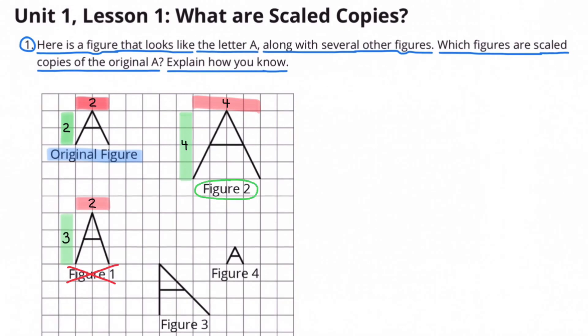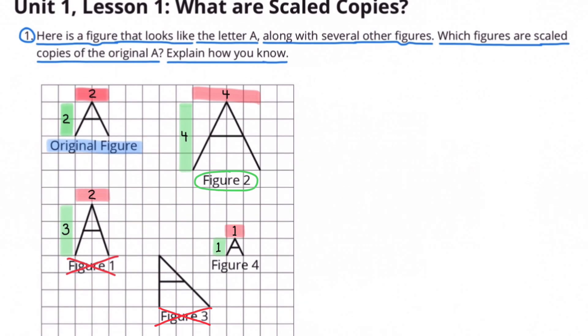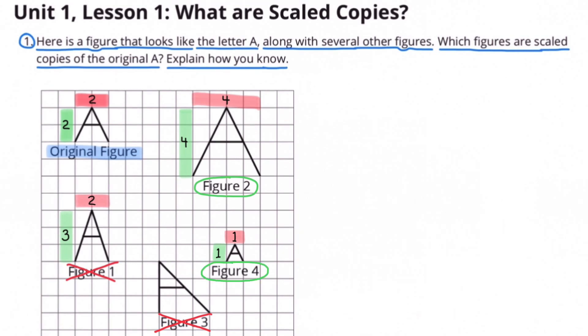Let's take a look at figure three. Figure three is not symmetrical like the original figure, so that is not a scaled copy. Let's take a look at figure four. Its height is one unit and its width is one unit, so yes, that is a scaled copy.